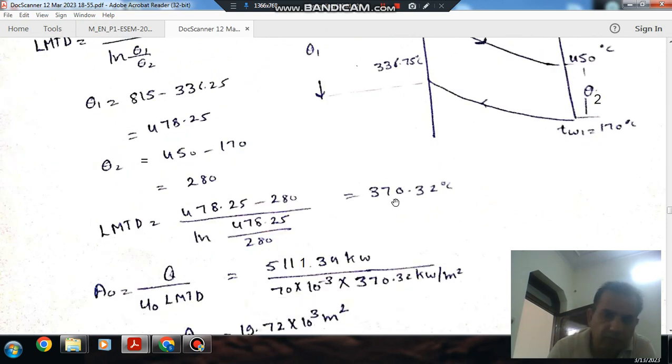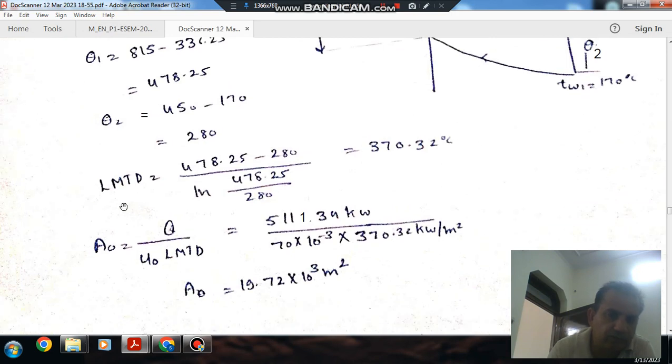So LMTD will be θ1 minus θ2 divided by natural log of θ1 divided by θ2.